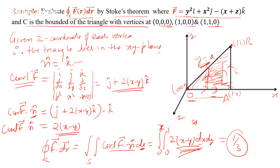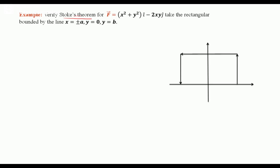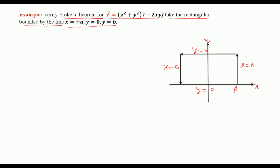We can easily evaluate the line integral using Stokes' theorem. Now let us verify Stokes' theorem for the vector F = (x² + y²)·i − 2xy·j, over the rectangle bounded by the lines x = ±a, y = 0, and y = b. We label the vertices A, B, E, and D, forming the closed curve C. We first evaluate the line integral, then the surface integral.